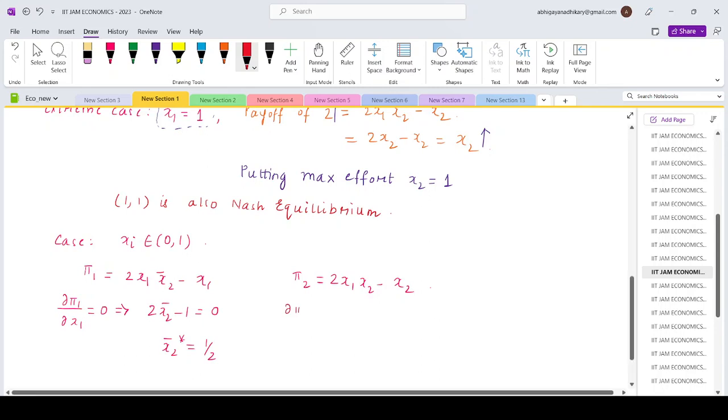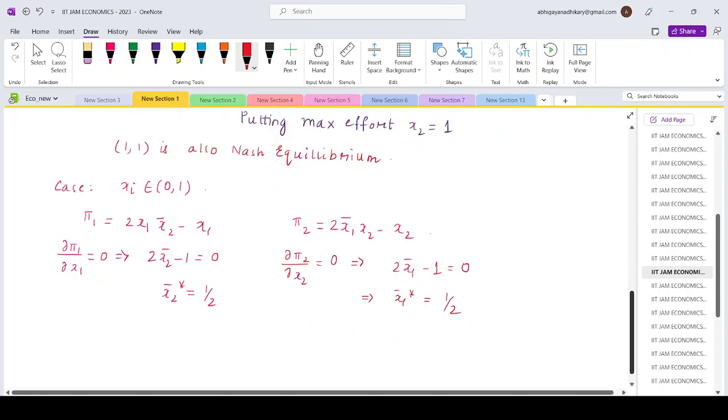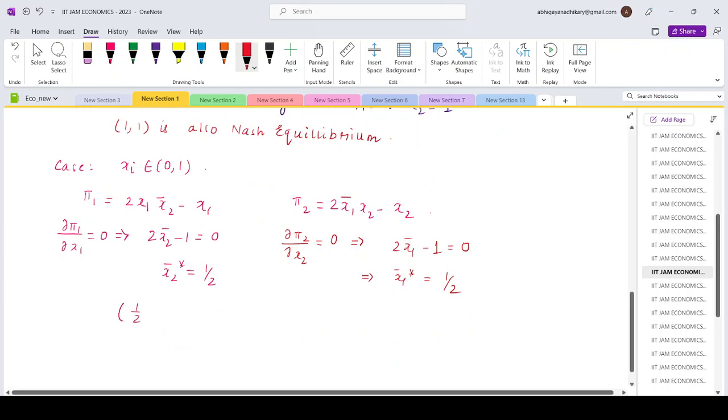And in the exact same manner, player 2 will be maximizing his payoff by choosing his level of effort. So differentiate this. That would be 2x1 bar minus 1 equals 0. So x1 bar is also equals to half. Therefore, (1/2, 1/2) is also a Nash equilibrium.